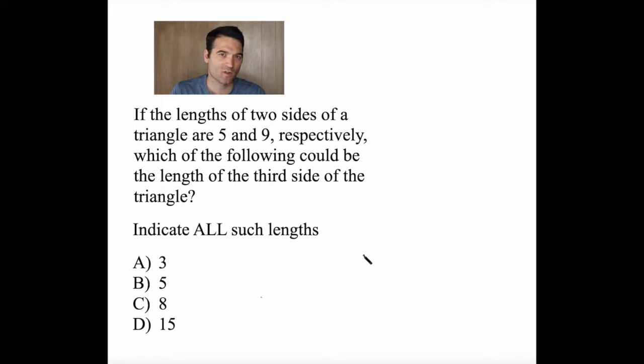If the lengths of two sides of a triangle are 5 and 9 respectively, which of the following could be the length of the third side of the triangle? And we want to choose all that apply.